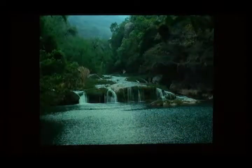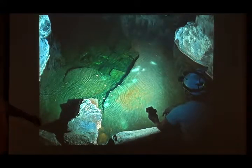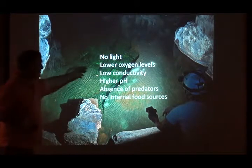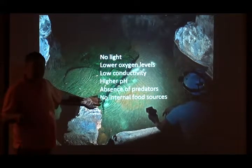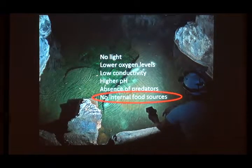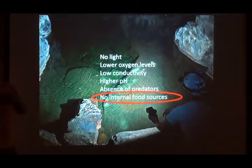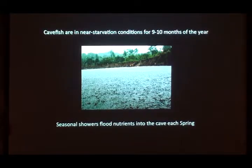The Sierra de Abra and Sierra de Guatemala ranges are where the various caves are located. This is what the rivers look like — very lush, with lots of animals and plants. The caves, in contrast, have no light, lower oxygen, lower conductivity, and higher pH. The good news is no one wants to eat you; the bad news is there's nothing to eat. With no light there's no photosynthesis, so there's no primary food chain — the amount of energy in these caves is way less than in a regular environment.